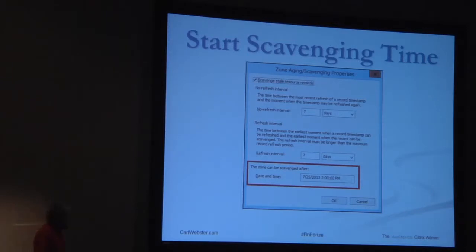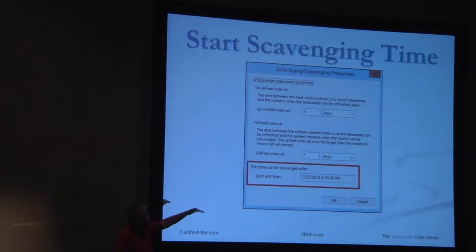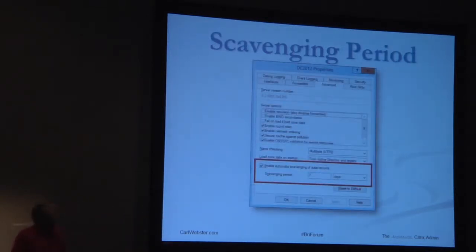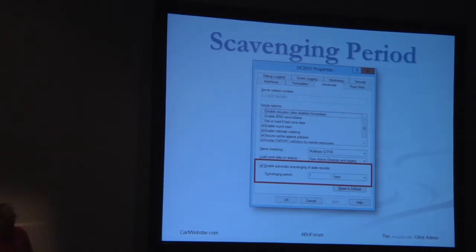The start scavenging time says: this is the date and time that this zone can be scavenged. It's calculated by looking at the current time on that DNS server or scavenging server — and it rounds down to the hour. The scavenging period is the time interval during which a record sits eligible to be scavenged. At the end of this seven-day period, a process runs on the scavenging server that looks at every record in DNS and checks which ones are eligible.